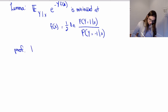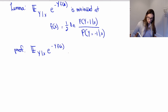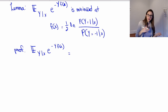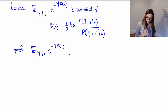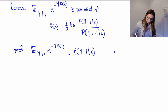Let's prove it by writing out the exponential loss. This distribution only has two values in it, so the expectation is a sum over outcomes times their probabilities. So we get: P(y=1|x) times e to the negative f(x), plus P(y=-1|x) times e to the positive f(x).